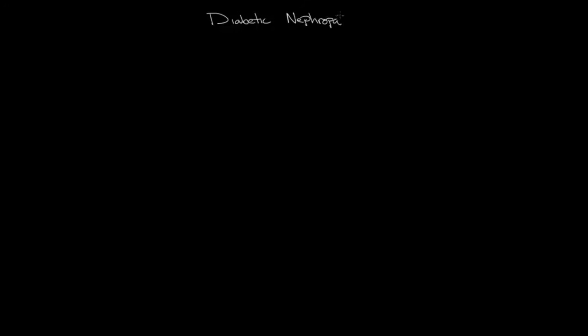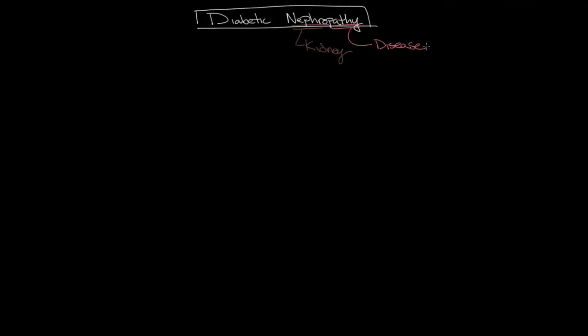One of the most serious chronic complications of diabetes mellitus is a condition known as diabetic nephropathy. Breaking down the term, nephropathy literally means kidney disease that occurs secondary to diabetes, and it's actually pretty common as it eventually affects about 20 to 40 percent of all individuals with diabetes, including both type 1 and type 2.